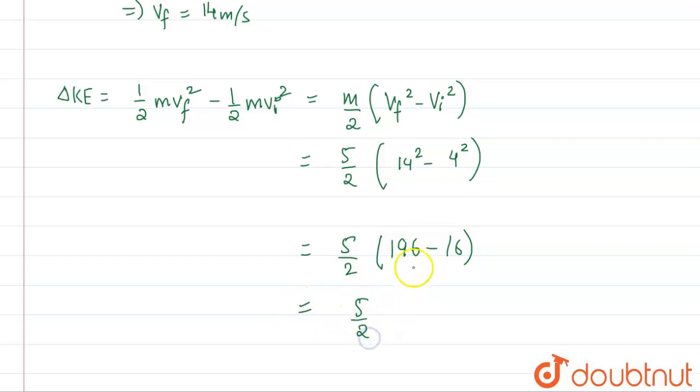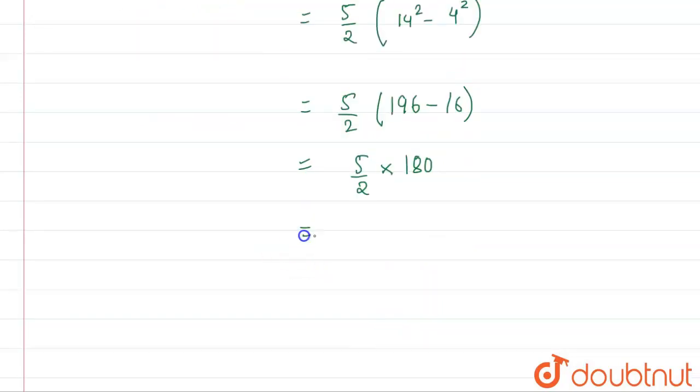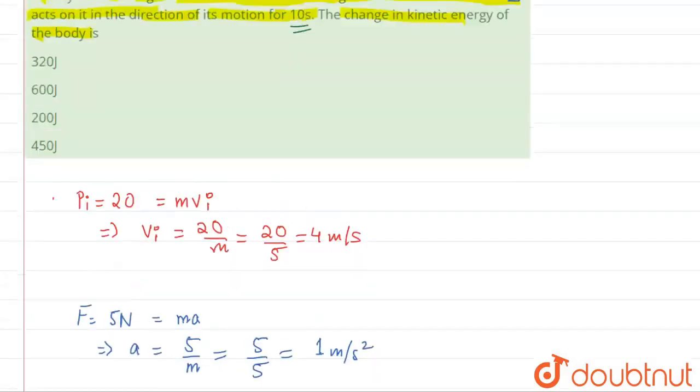So what we'll have is 5 by 2, and 16 will get subtracted so it will remain 180. So if you see, this will come out to be 90 into 5, and this will be equal to 450 joules. So this is our answer, this is the change in kinetic energy.